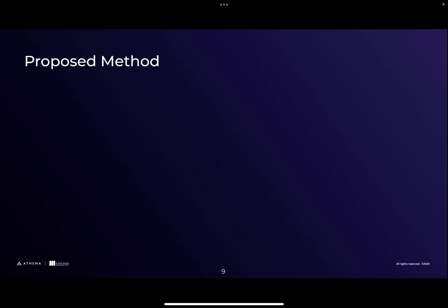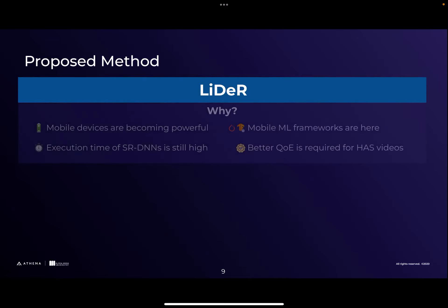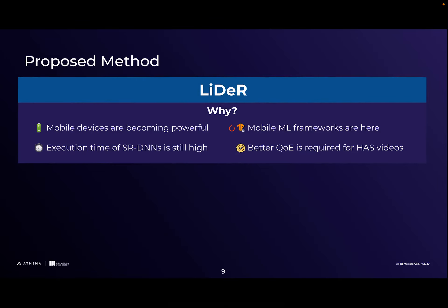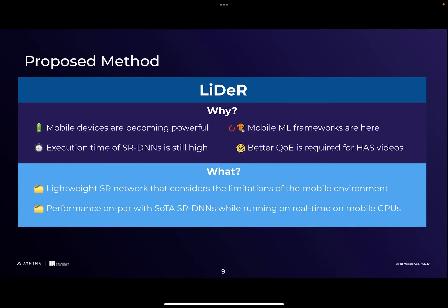We saw that mobile devices are becoming more and more powerful, and we know that mobile machine learning frameworks are here, so it will be easy to execute DNN approaches on mobile devices. However, the execution time of super resolution deep neural networks is still high on mobile devices, and we know that a better quality of experience requires high-quality adaptive streaming videos. So we propose a lightweight super resolution network that addresses the limitations of the mobile environment. When we evaluated the results, we found its performance is on par with state-of-the-art super resolution approaches while also managing to run in real-time on mobile GPUs.